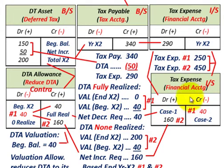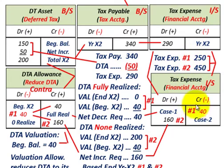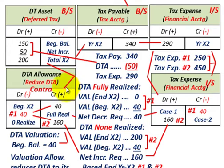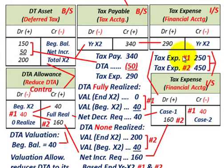Going back to look at your tax expense: you had a debit of $290,000, but with the $40,000 reduction from the valuation account, you ultimately get down to a tax expense of $250,000 in Case 1. By getting rid of the valuation account and reducing it to zero, you increased your deferred tax asset by $40,000, reducing tax expense from $290,000 down to $250,000.